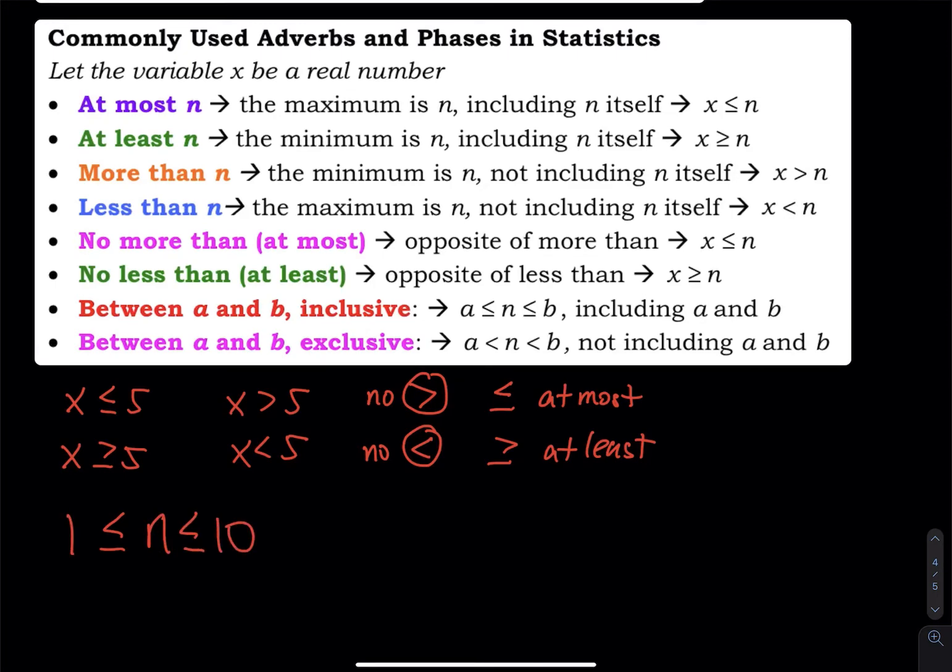1, 2, 3, 4, 5, 6, 7, 8, 9, 10. A number between 1 and 10, including 1, including 10.